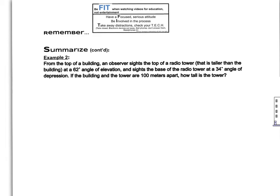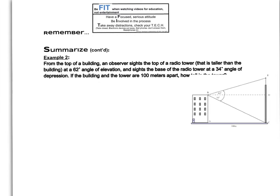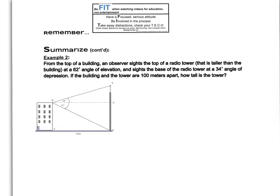All right, here's another example that you might encounter a problem something like this. This example 2 says, from the top of a building, an observer cites the top of a radio tower that is taller than the building at a 62 degree angle of elevation and cites the base of the radio tower at a 34 degree angle of depression. The question is, if the building and the tower are 100 meters apart, how tall is the tower? So we need to find the height of the tower. So we can sketch a picture and we want to make sure we have a building with a person standing on the top and a radio tower next to it that is a little bit taller than the building. And so this is what we have going on here. And I'll just remind you that this drawing is probably not drawn to scale. So just keep that in mind.